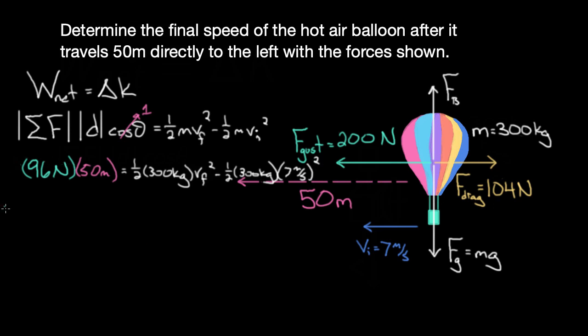96 times 50 equals 4,800. That's the net work done—notice that's joules. That's how much energy we've added. That's the change in kinetic energy. We've added 4,800 joules of kinetic energy.